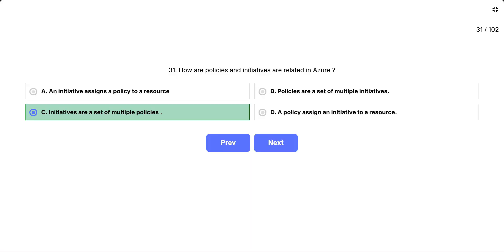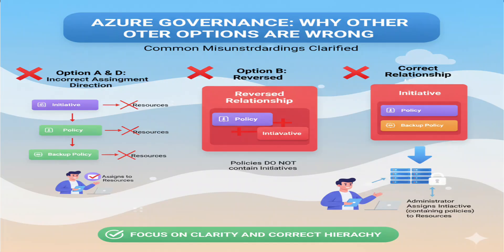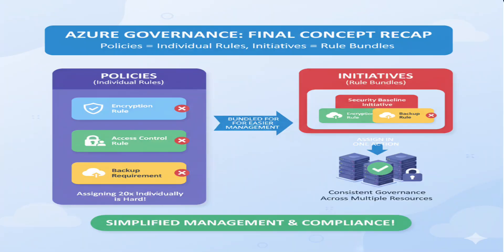Why the other options are incorrect: Options A and D get the assignment direction wrong — initiatives and policies don't assign each other to resources; administrators assign them to resources. Option B reverses the relationship — policies don't contain initiatives, it's the other way around. Remember: policies equal individual rules, initiatives equal rule bundles.